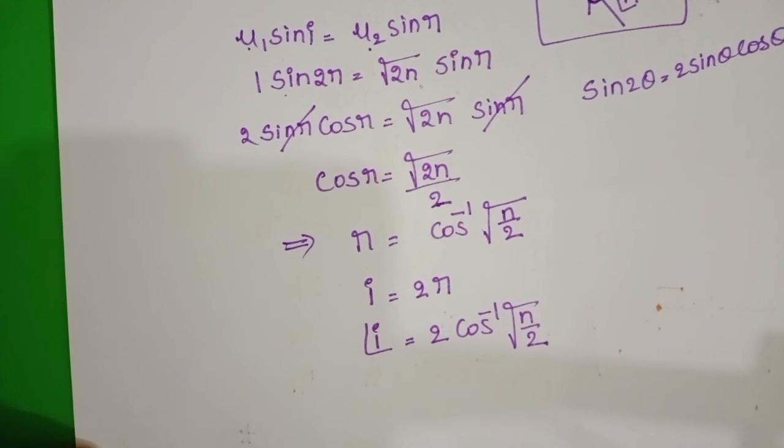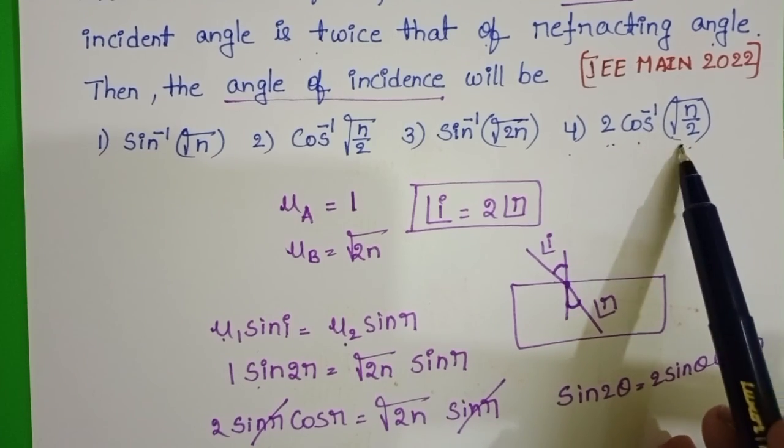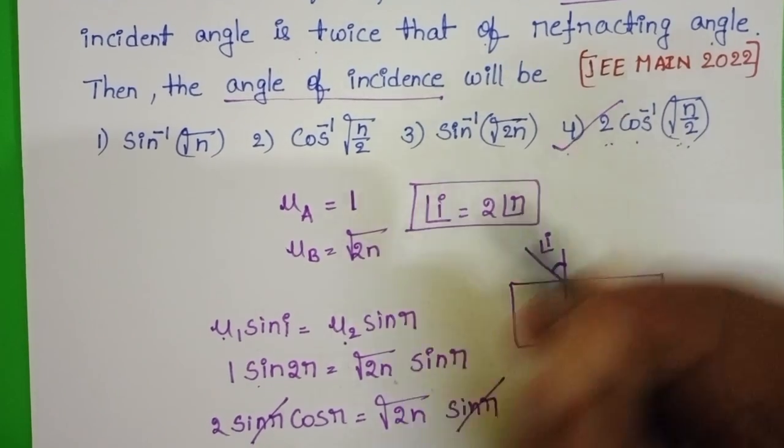Checking the given options, 2 cos⁻¹(√(n/2)) is the fourth option, which is correct.